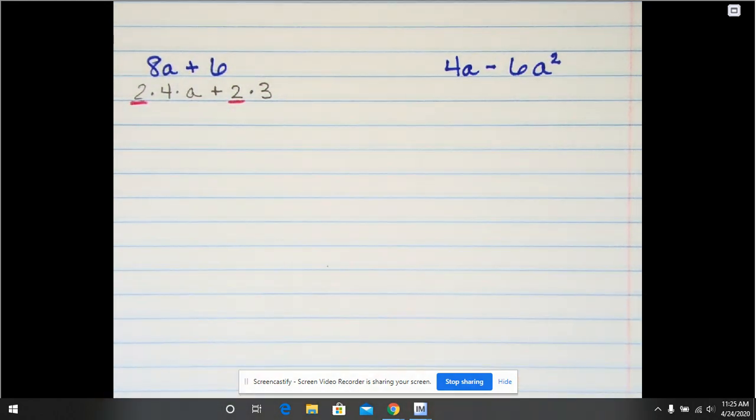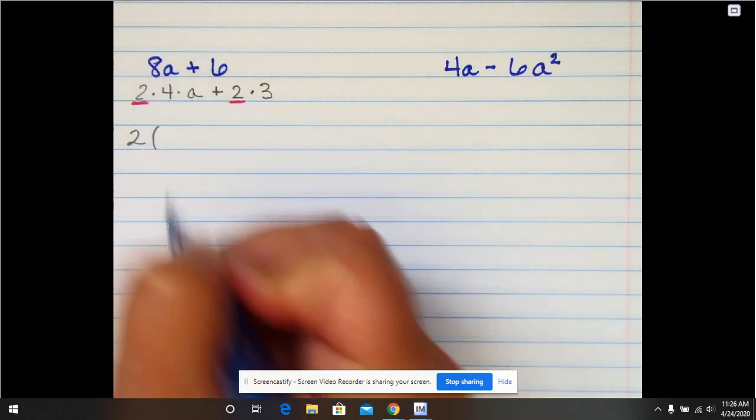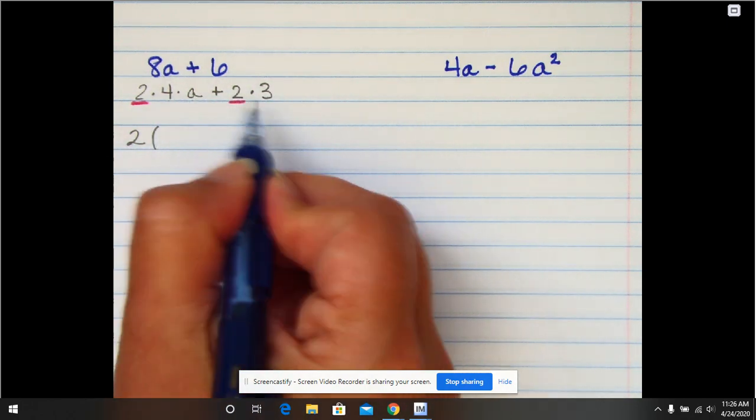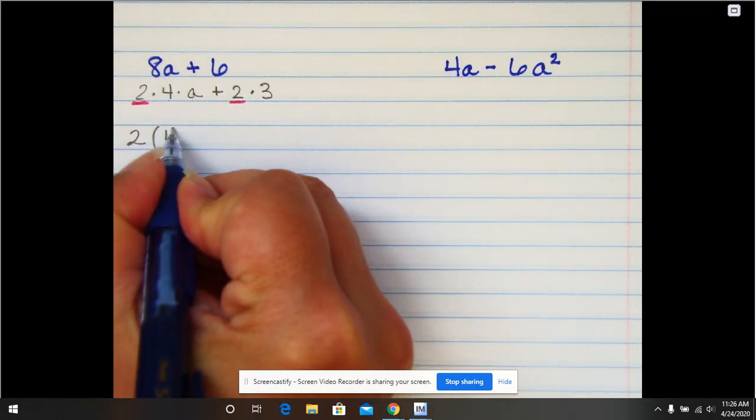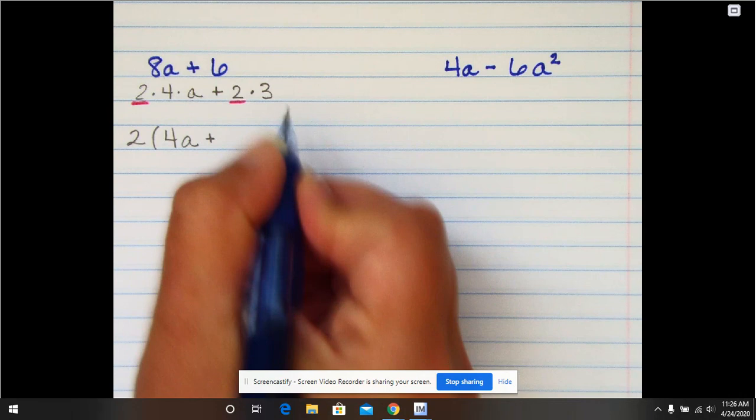So we're going to factor out the 2. I take the 2 and write it down and then put a parentheses. Inside the parentheses are going to go everything that's not common. So 4 times a plus 3.